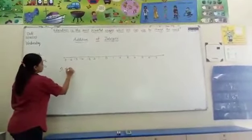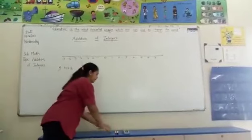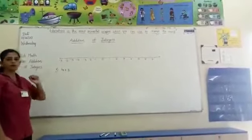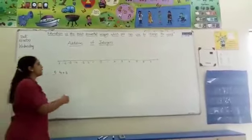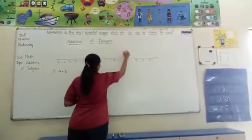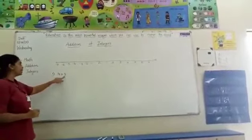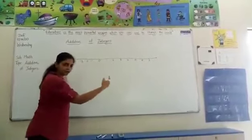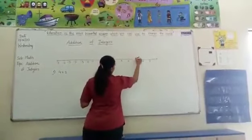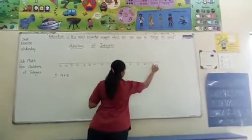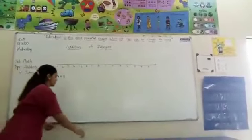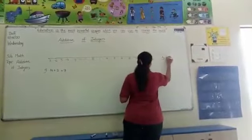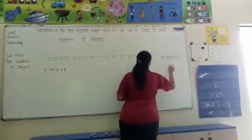First example: 4 plus 3. Here both integers are positive. The first number is 4, so we go from 0 to 4. Now we have to add 3. Since we are adding a positive integer, we move towards the right side — 3 steps: 1, 2, 3. So the answer is 7. Therefore, 4 plus 3 is equal to 7.